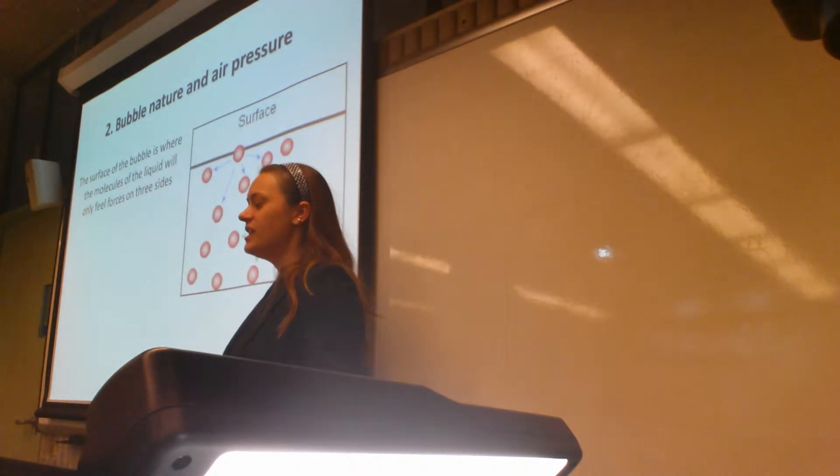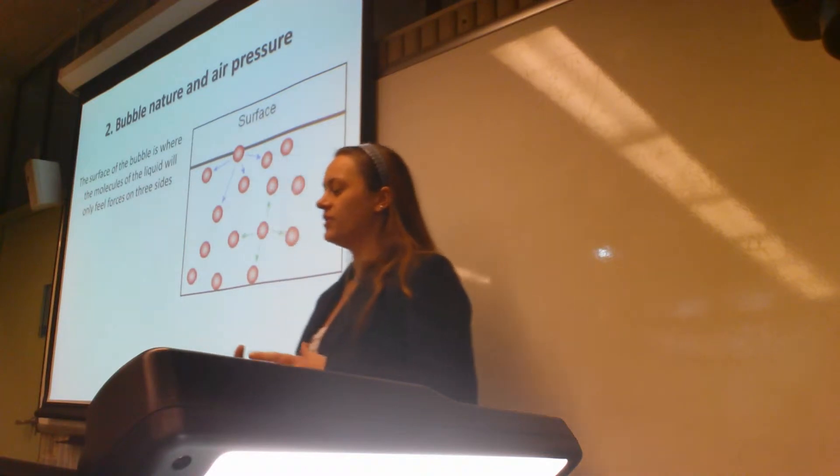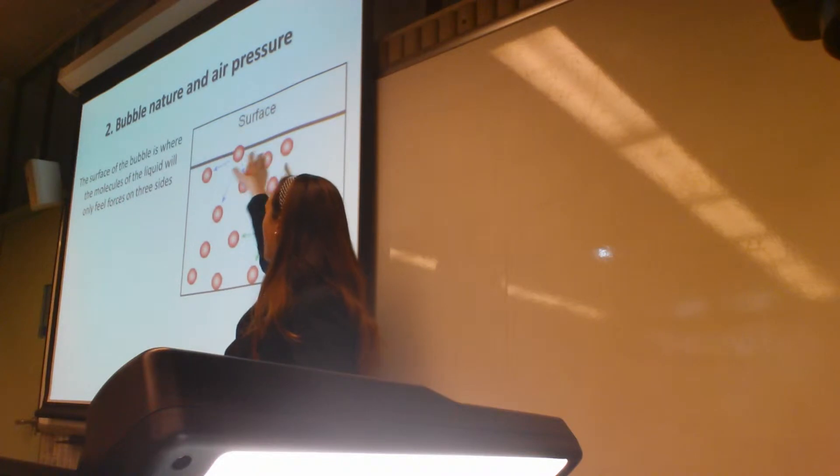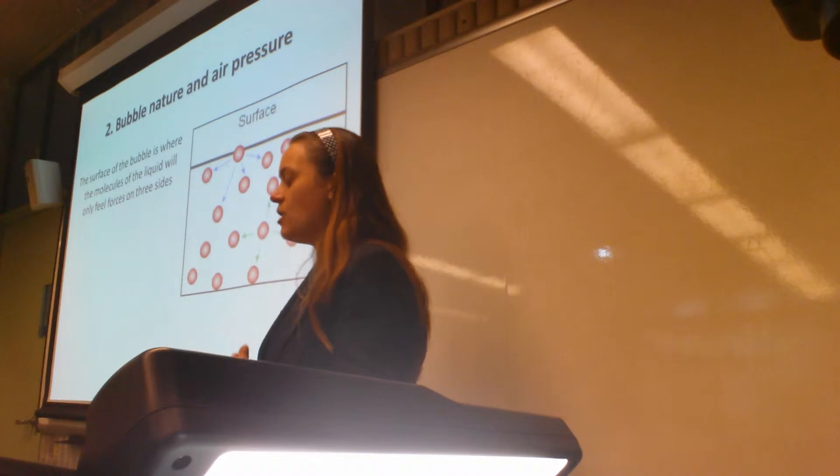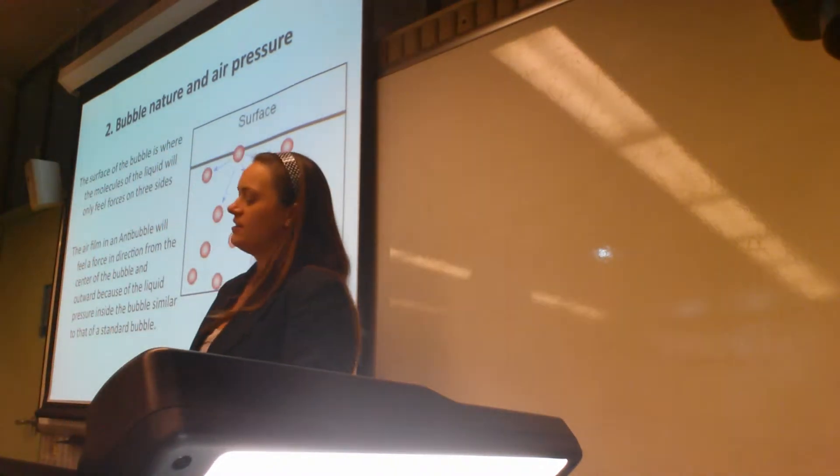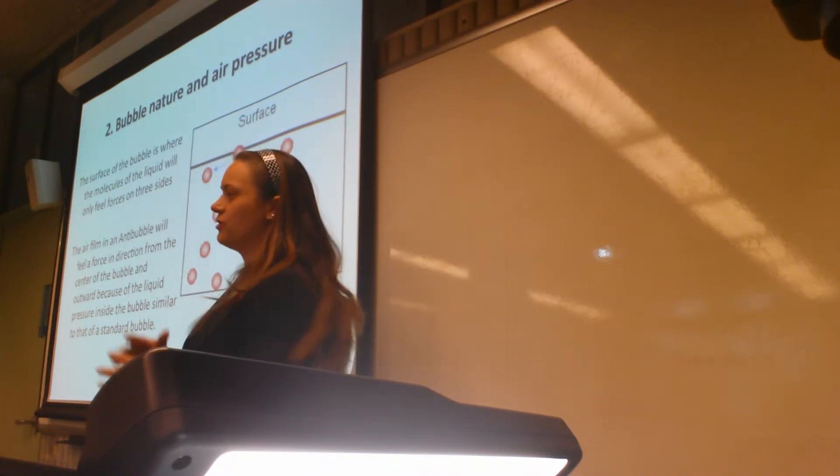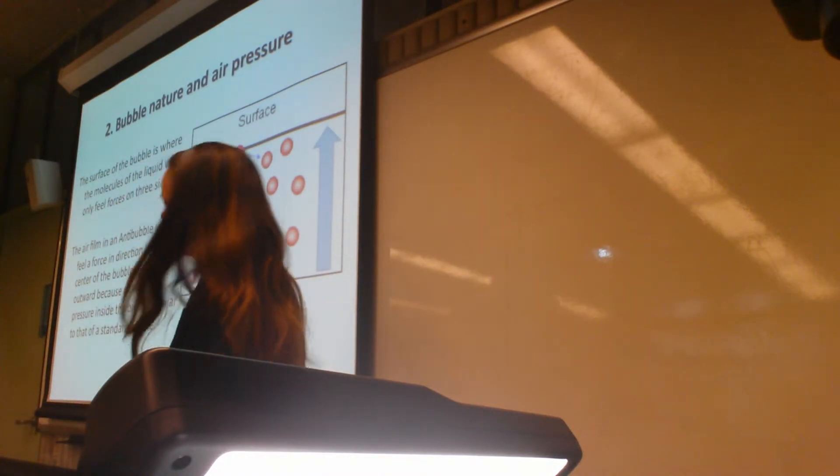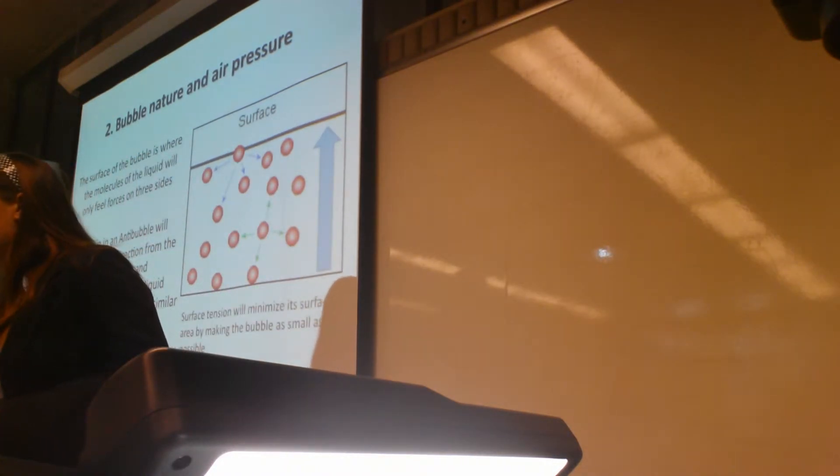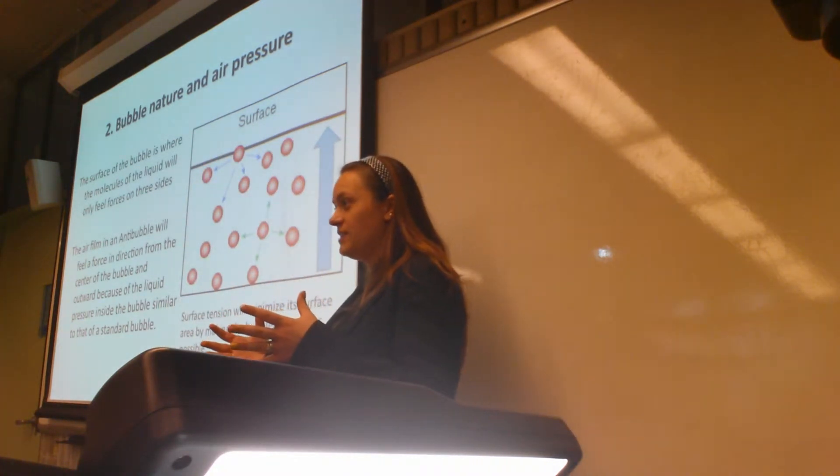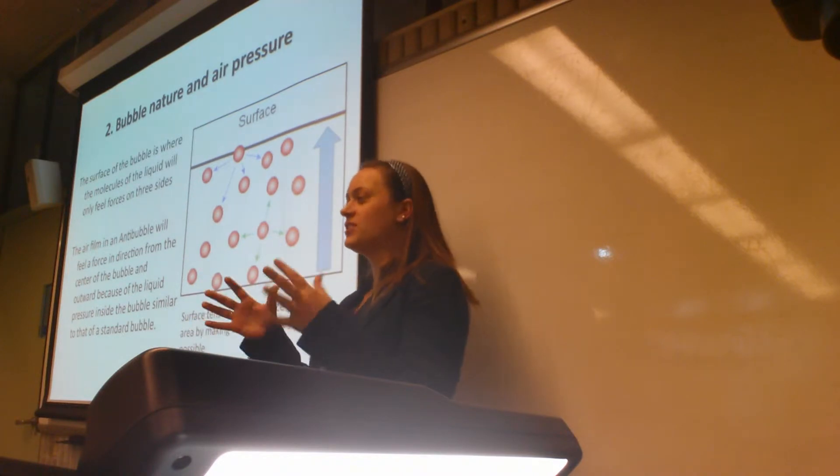The surface of a bubble is where the molecules of the liquid feel force on three sides. Underneath, they feel it on four sides, but on top, there's no pressure from above. So they feel forces on three sides, which gives an overall upward force towards the surface. The surface tension will always work to minimize the surface. This is why bubbles have a spherical shape.